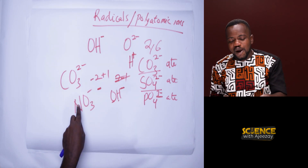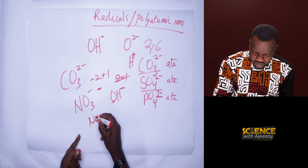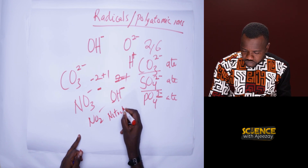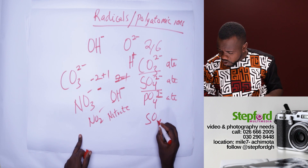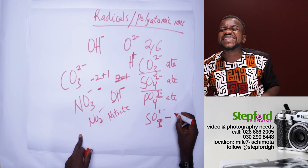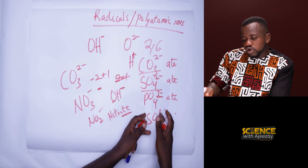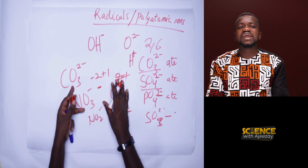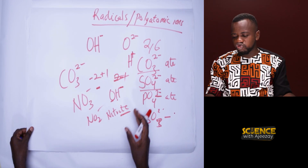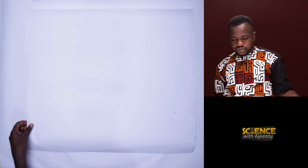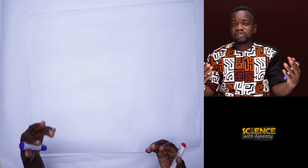When you reduce the number of oxygen atoms in an ATE radical, it becomes ITE. So nitrate becomes nitrite. For sulfur, if you reduce the number of oxygen by one, SO₄ becomes SO₃²⁻, and it is called sulfite. If you reduce phosphate by one oxygen, that is PO₃. Just pay attention that these are all called radicals — a group of atoms having a single charge.